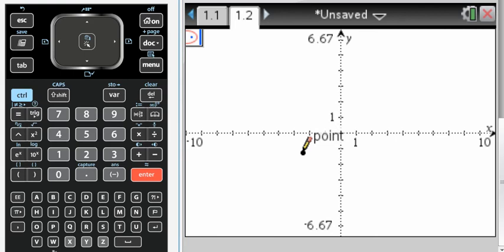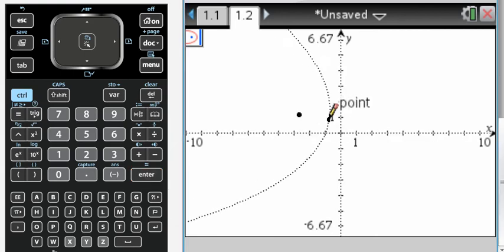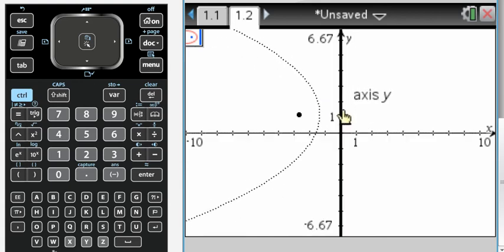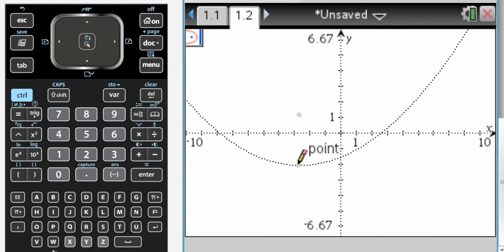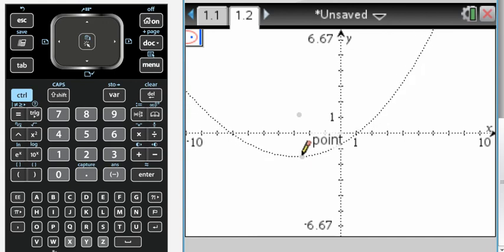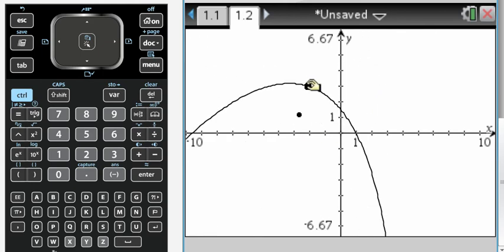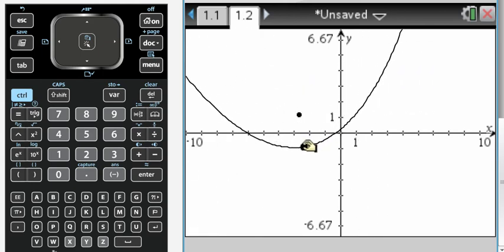So a parabola is the set of all points equidistant from a point, so that's the point, the focus, and a line. So what happens here is that it's going, actually it's the point and the vertex is what you're looking at. And curiously, it does not appear to show you the directrix. I've actually never played with this, so I didn't know that was going to happen.